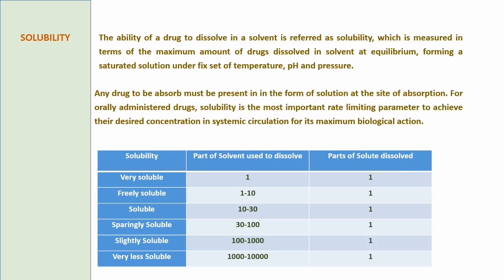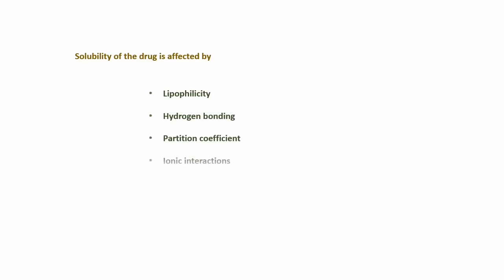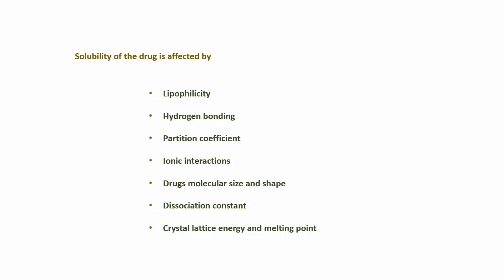Drug की solubility बताने के लिए कुछ parameters decide किये गए हैं। अगर drug का एक part, solvent के एक part में पूरी तरह dissolve हो जाता है तो ऐसी drug को highly soluble कहते हैं। Freely soluble के लिए drug का एक part, solvent के 1 to 10 parts में dissolve होना जरूरी है — all parameters can be seen in the table। Drug की solubility और absorption affect होती है इन factors से: drug की lipophilicity, hydrogen bonding, partition coefficient, drug-solvent ionic interaction, drug molecule का size और shape, dissociation constant, crystal lattice energy, और melting point।